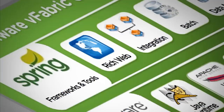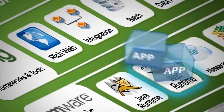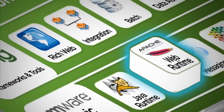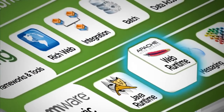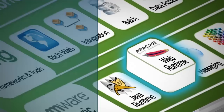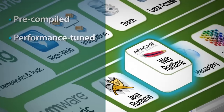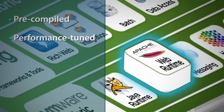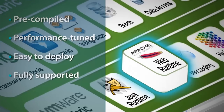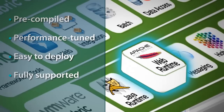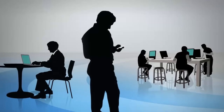When it comes to web servers, Apache has everything modern apps require. vFabric includes Apache HTTP, pre-compiled with all the services you need, plus fast deployment and full VMware support.